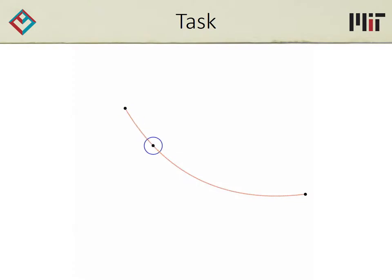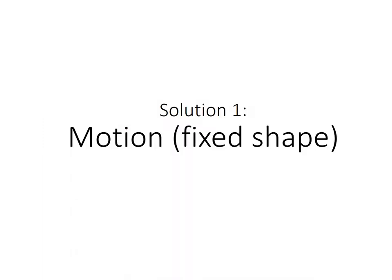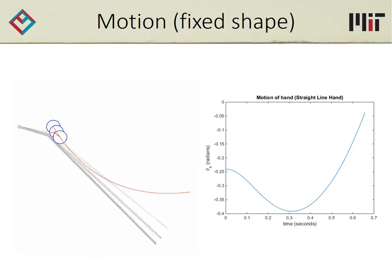To illustrate the power of simultaneous shape-motion design, let's start with a simple problem. The goal is to drive the ball along a given path. While this can be accomplished by shape or motion design alone, we can do even more by designing both simultaneously. First, let's restrict ourselves to searching over the space of effector motions while fixing the shape — we'll set it to be a straight line. With our framework, we can find an effector motion that drives the ball along this path.